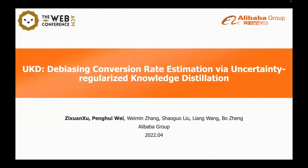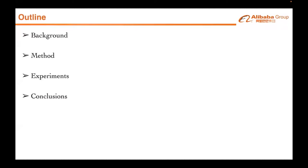Hi everyone. Here is a presentation of our paper, UKD: Debiasing Conversion Rate Estimation via Uncertainty Regularized Knowledge Distillation. It contains four parts: background, method, experiments, and conclusions. Firstly, we introduce the background.